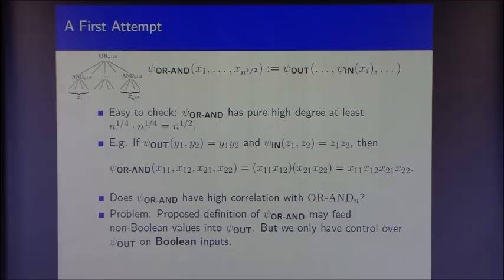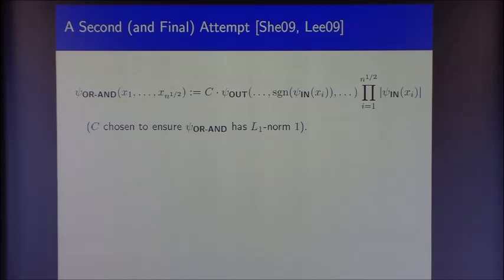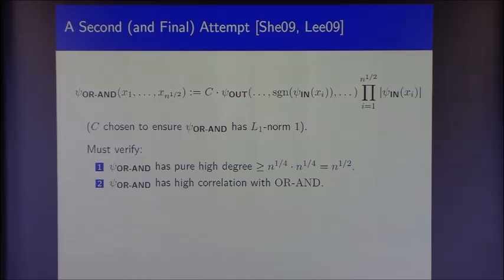What we do instead — introduced in prior work by Sherstov and Lee — is essentially the simplest thing to force Boolean values to be fed into ψ_out. We feed the sign of ψ_in into ψ_out, and multiply by the magnitude of ψ_in outside the composition. This combined dual witness, it turns out, satisfies both required conditions: pure high degree-ness (established in prior work) and good correlation with OR-AND (which was the contribution of the new work).